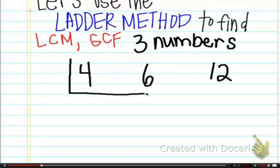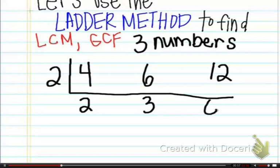You're going to do an upside-down division box. This time, you only need to have two numbers that have something in common. In this case, however, all three have a two in common. So we're going to divide out a two. Four divided by two is two, six divided by two is three, and twelve divided by two is six. And you ask yourself again, do at least two of these numbers have a common prime number? And the answer is yes.